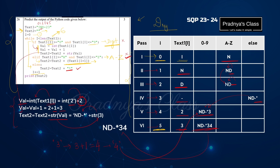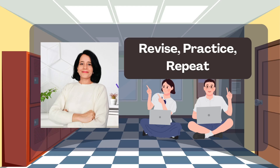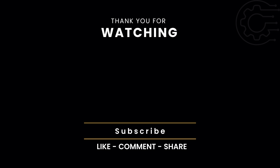That's why our final output is nd-star-3-4. Hope you found this session informative and useful. If so, don't forget to share it with your friends. In the next video, we are going to discuss one of the important data types — that is list. Until next time, stay motivated. Keep studying. I will see you in the next one.